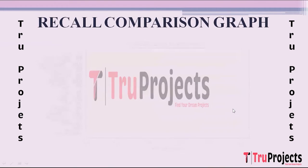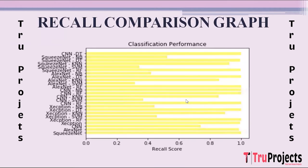This is the recall comparison graph. In this graph, the x-axis shows recall score and the y-axis shows algorithm names. Recall measures the ability to identify all relevant instances, showing how many actual positives were correctly predicted.